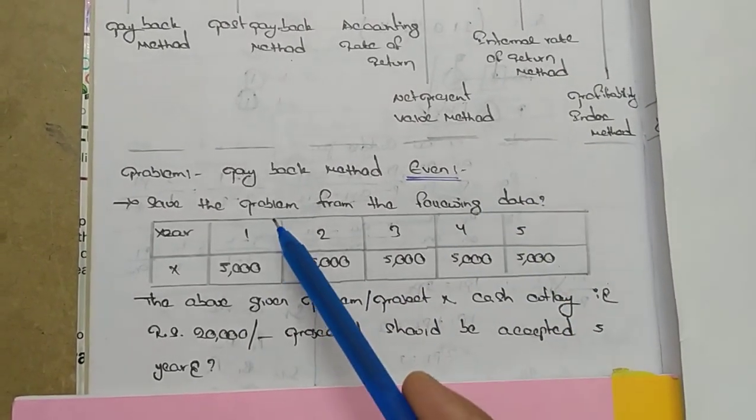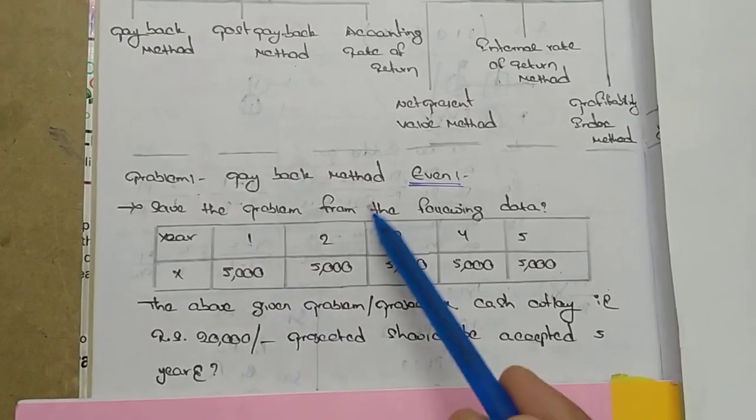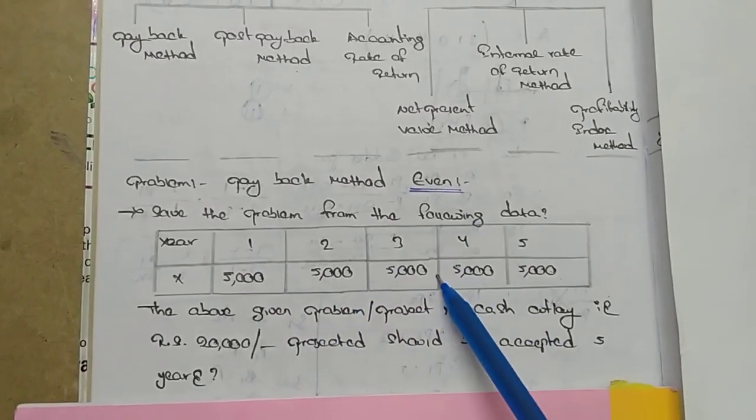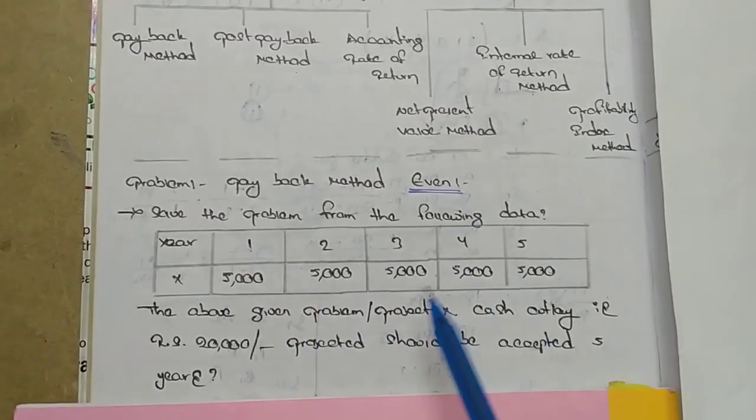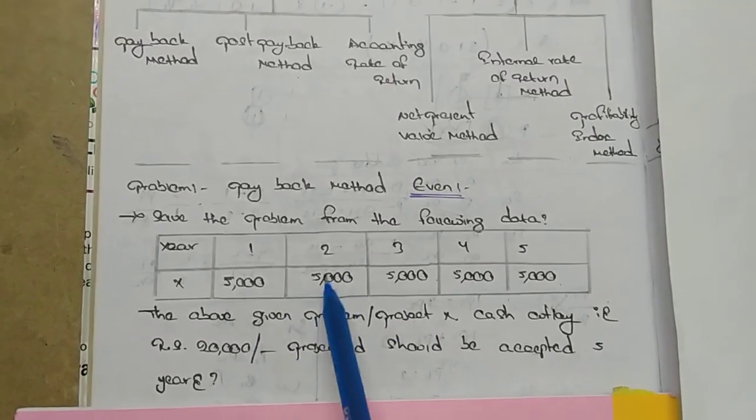Uneven would be, for example, first year 8000, second year 7000, third year 2000, all uneven. This is an even problem with constant amounts.